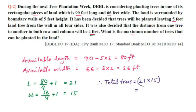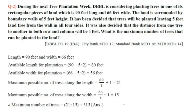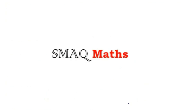21 × 15: 20 times 15 is 300, plus 1 times 15 is 15, so 315. The maximum number of trees that can be planted is 315. That is the answer. Thank you for watching.